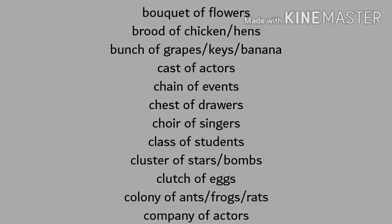Here is another list of collective nouns: a bouquet of flowers, a brood of chickens or hens, a bunch of grapes, a bunch of keys, a bunch of bananas, a cast of actors, a chain of events, a chest of drawers, a choir of singers, a class of students, a cluster of stars, a cluster of bombs, a clutch of eggs, a colony of ants, frogs, rats, and a company of actors.